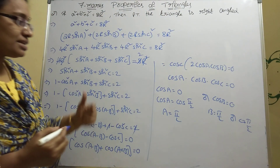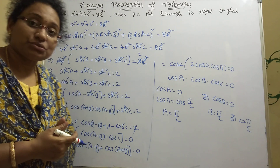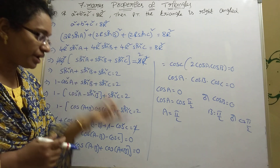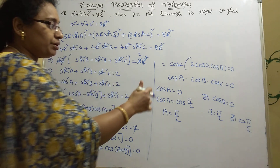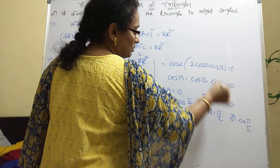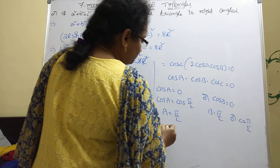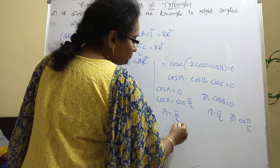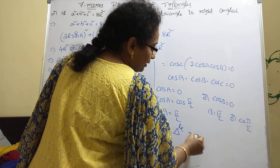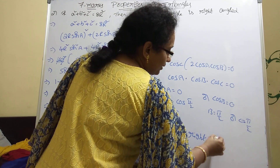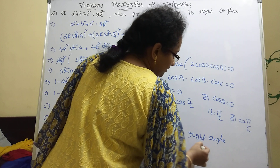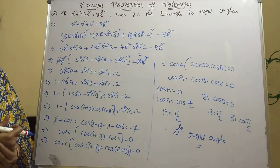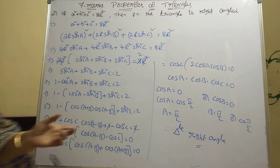If cosA = 0, then A = π/2 (90°). Note that 270° is not possible in a triangle, so only one angle can be 90°. Therefore, the given triangle is a right-angle triangle. This is a very important problem.